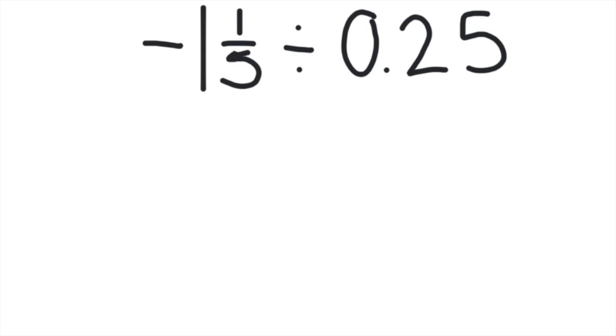-1⅕ ÷ 0.25. Let's estimate. That's going to be -1 ÷ 0.25. Well, how many quarters go into 1? 4. So the answer is -4. A negative divided by a positive is a negative. Now let's find the real answer.